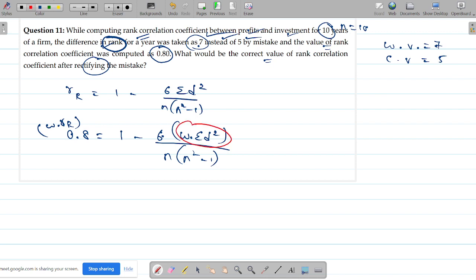In the value of the correct, obviously this value of the whole will be correct. So I have to correct this value. How can I get this value alone? Nominal of the cross multiply. So 0.8 equals 1 minus 6 times summation d squared divided by 10 into 10 squared minus 1 is 990 directly. What is 6 summation d squared alone?